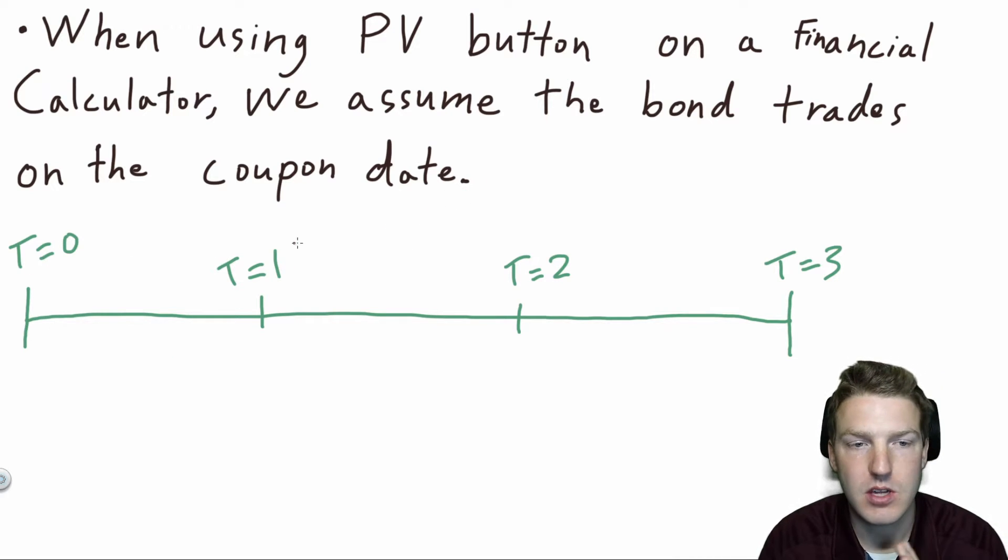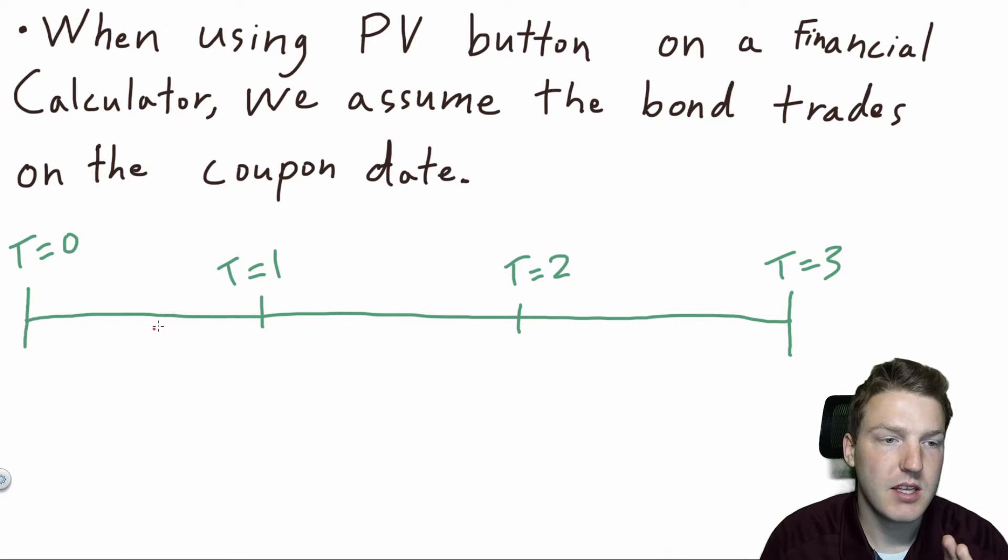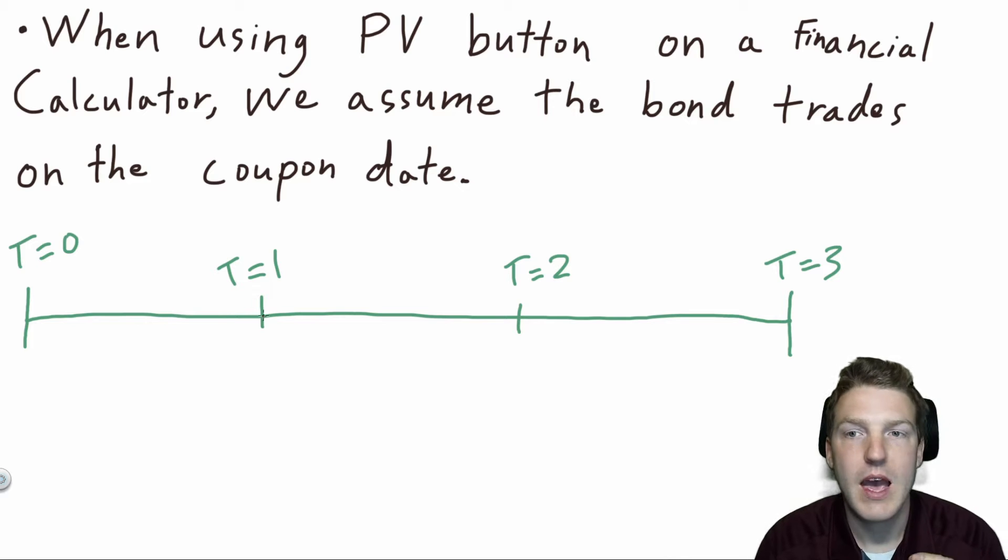So if we have this timeline, we can say that the bond has a three-year life, and right here is the initiation of that bond. Then this is one year in, this is two years in, and this is when the bond matures. When we use the PV button, we're assuming that the bond is trading on this date, or this date, or this date. But what typically is happening is it trades in between those dates. So that is when we need to calculate the dirty price.